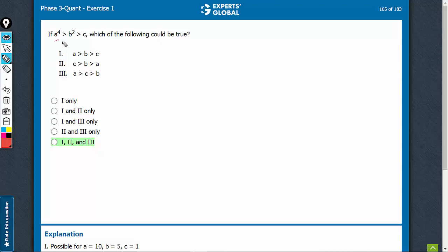It's given that a^4 > b^2 > c. So of course, something like this is possible. Let's say a = 10, b = 5, c = 2. That's a no-brainer.